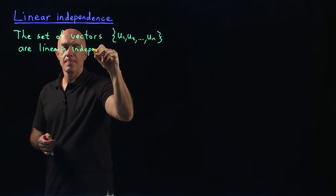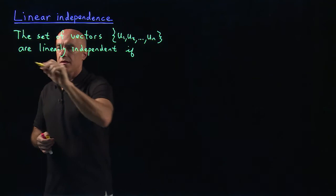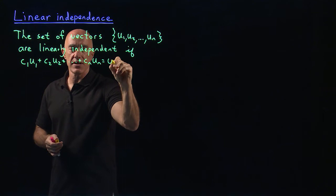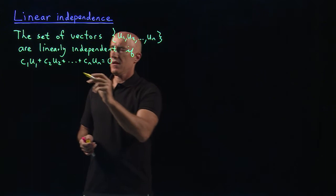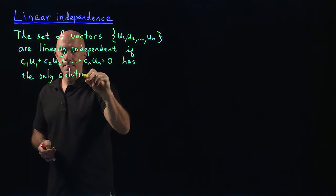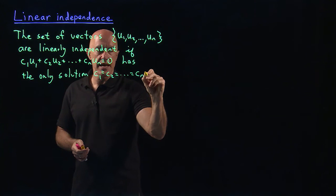if the equation C1*U1 plus C2*U2 plus Cn*UN equals 0 for scalars C1, C2 through Cn. If this equation equals 0, has the only solution C1 equals C2 equals dot dot dot equals Cn equals 0.